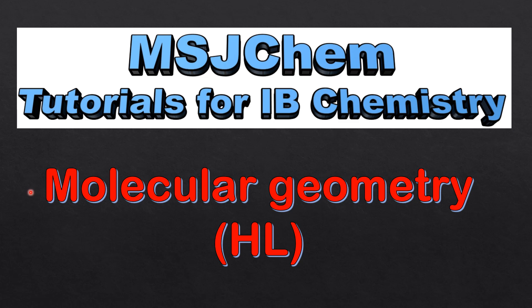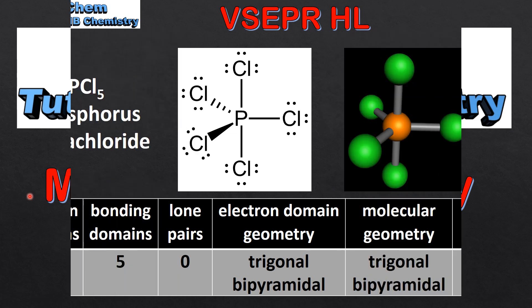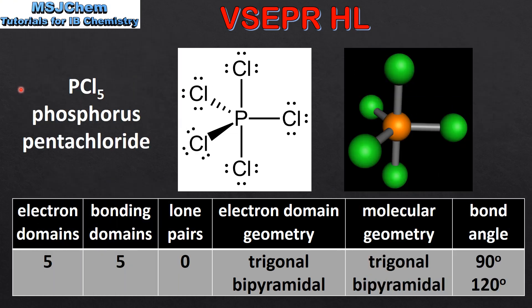This is MSJChem. In this video I will be looking at molecular geometry for the higher level. We will start by looking at molecules with 5 electron domains around the central atom.